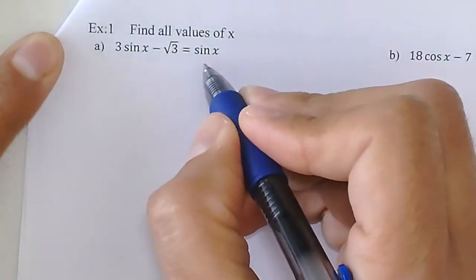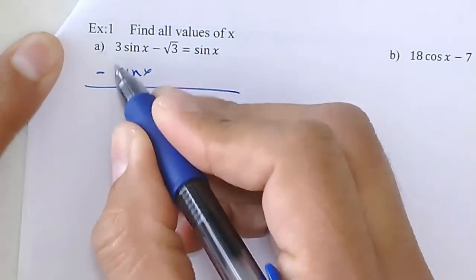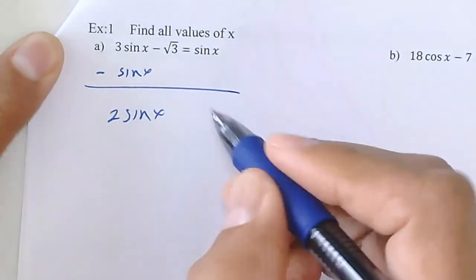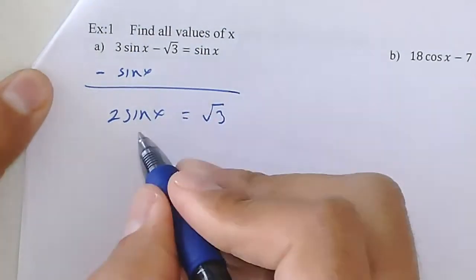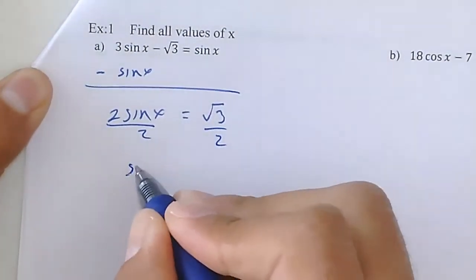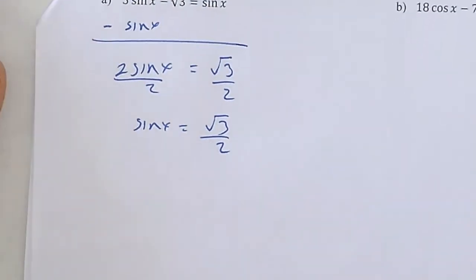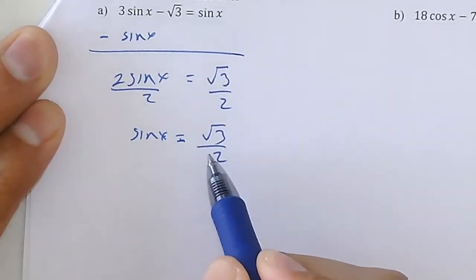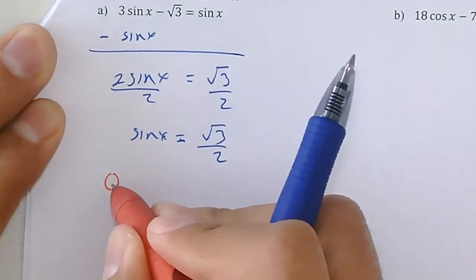I'll do a little algebra. I subtract sin(x) from both sides, giving me 2sin(x), then add √3 to the right side. Dividing by 2 gives me sin(x) = √3/2. Now I pause and think: when is sine equal to positive √3/2?